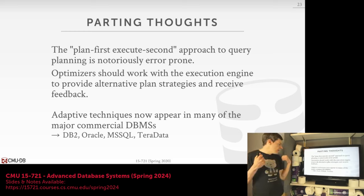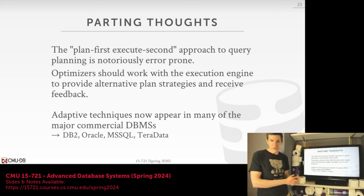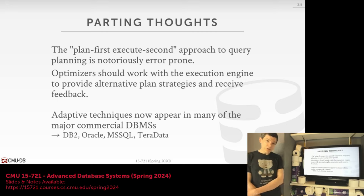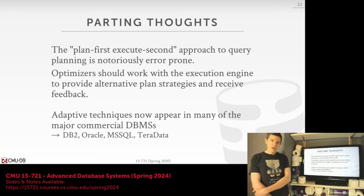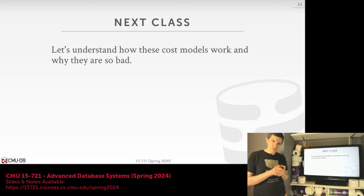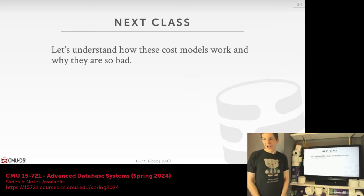In addition to more sophisticated query optimizers, all major database vendors now support adaptive query optimization — mostly in the last three or four years. DB2 had LEO in the early 2000s, but recently Oracle, SQL Server, and Teradata all include adaptive query optimization. To the best of my knowledge, PostgreSQL and MySQL simply can't do this, and none of the newer open source systems from the last decade support anything like this. Next class we'll start discussing how cost models work and why they can be so bad.